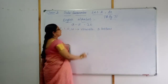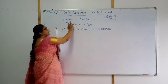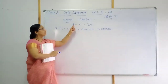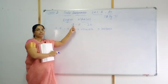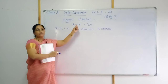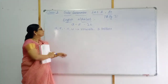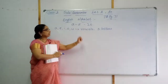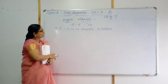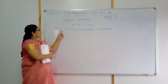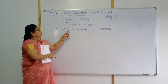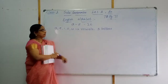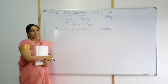We have 26 letters in the English alphabet — A, B, C, D, E, F, G... you know that. After these 26 letters, A, E, I, O, U are vowels.